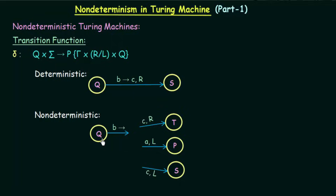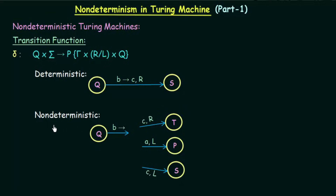Here is an example of a non-deterministic Turing Machine with states Q, T, P, and S. State Q on getting input symbol B can either go to state T by writing C and moving right, or go to state P by writing A and moving left, or go to state S by writing C and moving left. So on getting one input symbol, it can have more than one move — this is the property of non-determinism.